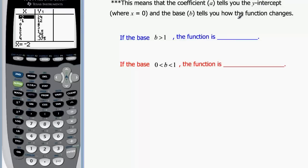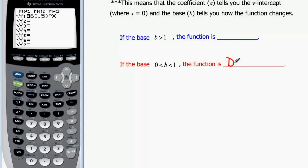And b tells us how the function changes. Now this particular one, b was one half. So that would be this case down here in red, where b is greater than zero but less than one. Our function was decreasing. And in the other case, when we had three times two, remember we were multiplying by two and our numbers kept getting bigger. So it increases when b is greater than one.